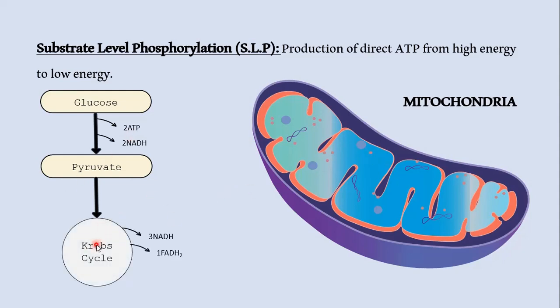The end products of one Krebs cycle are: three NADH, one FADH2, one ATP, and two carbon dioxide molecules. Since two molecules of pyruvate cause the running of two Krebs cycles, the amounts double — six NADH, two FADH2, two ATP, and four carbon dioxide are produced from two molecules of pyruvate in the matrix of mitochondria.